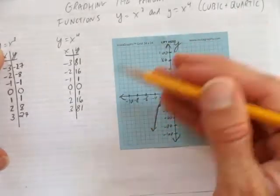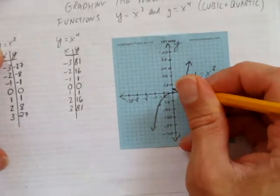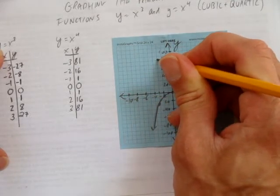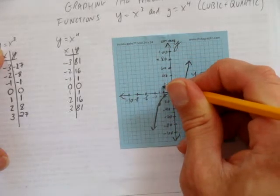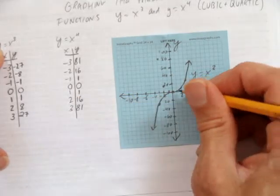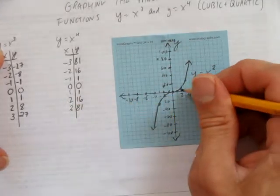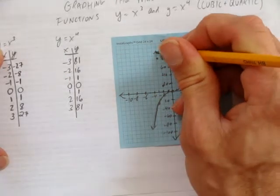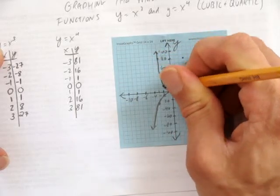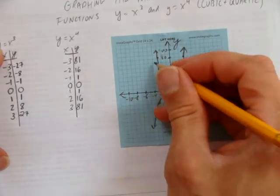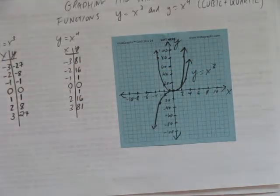The parent function cubic looks very different from the parent function of a quartic. The quartic also passes through 0, 0. At negative 3, it's at positive 81, way up high. At negative 2, it's at 16. At negative 1, it's at 1, which because of the scale is way down near the bottom. Then 0, 0; 1, 1; at 2 it's back up to 16; and at 3, back up to 81. The quartic's shape looks somewhat like a quadratic, but its U-shape is much more pronounced and flat at the bottom, and much steeper as it grows. That's how to graph the parent functions of cubic and quartic, y equals x cubed and y equals x to the power of 4.